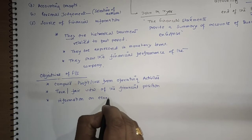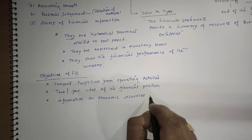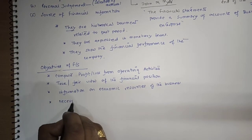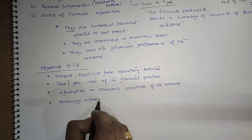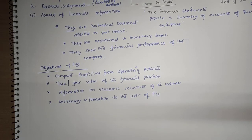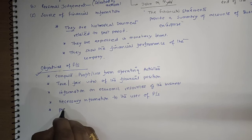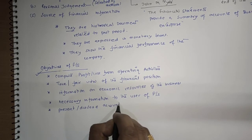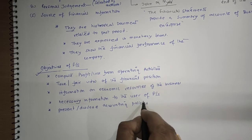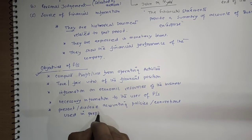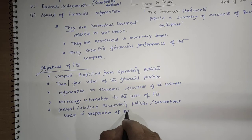It gives information on economic resources of the business. Then it provides necessary information to the users of the financial statement. And the most important last objective is to present and disclose accounting policies and conventions used in the preparation of books of accounts.